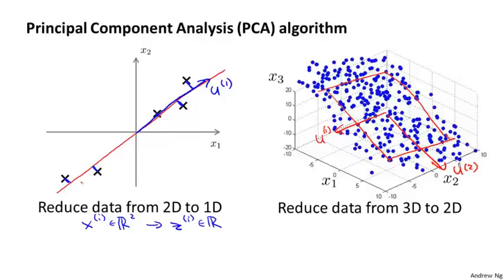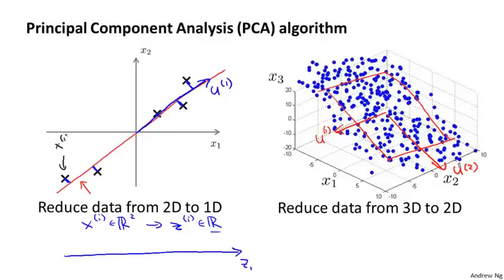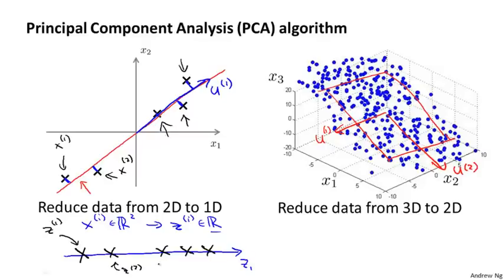By projecting the data onto the red line, we need only one number to specify the position of a point on the line. I'm going to call that number z, or z1 — this is a real number, so that's like a one-dimensional vector. So if this example here was my example x1, then maybe that gets mapped here, and if this example was x2, maybe that gets mapped here. This point here would be z1 and this point would be z2, and similarly x3, x4, x5 get mapped to z1, z2, z3.